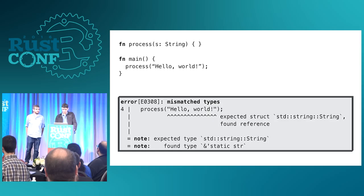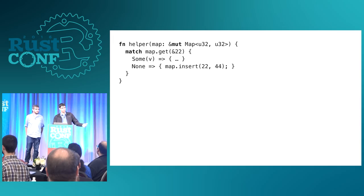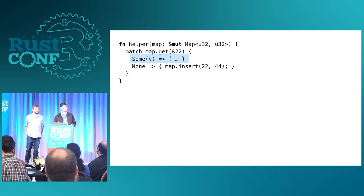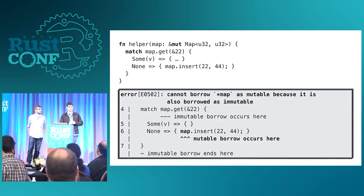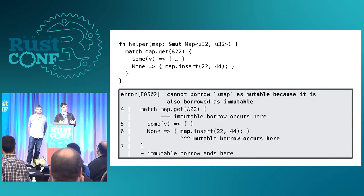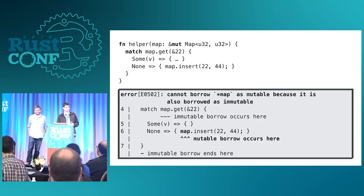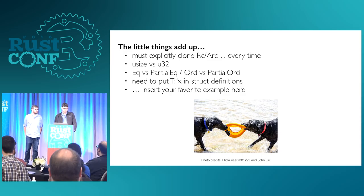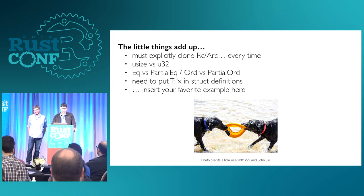A similar example many of us have experienced: if you have a reference to a map and get a key, you've borrowed the map and can't mutate it — that's basic. But if the key is not present in the map, you still can't mutate it, because the borrow checker has a lexical notion of how things work and doesn't understand control flow as well as it could. Once you understand it works on lexical scope, you get it — but before that you might think you don't understand the borrowing system, when really you just don't understand how conservatively the compiler is reasoning.